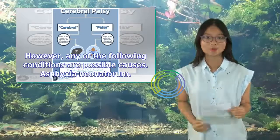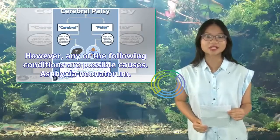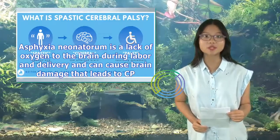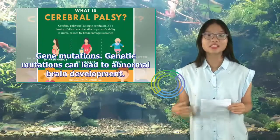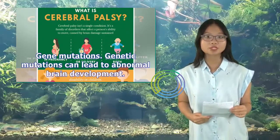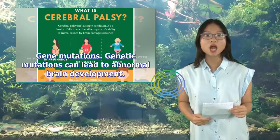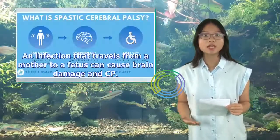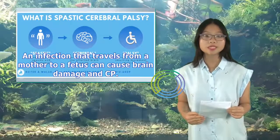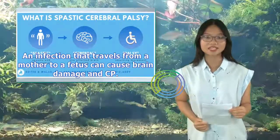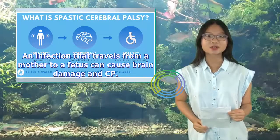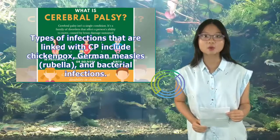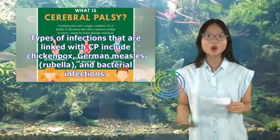Asphyxia neonatorum is a lack of oxygen to the brain during labor and delivery and can cause brain damage that leads to CP. Genetic mutations can lead to abnormal brain development. Infections during pregnancy — an infection that travels from a mother to a fetus can cause brain damage and CP. Types of infections linked with CP include chickenpox, German measles, rubella, and bacterial infections.